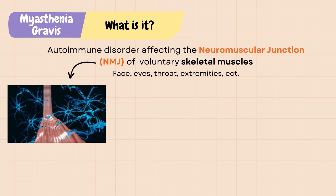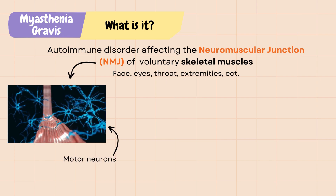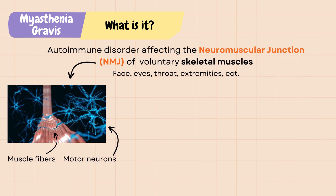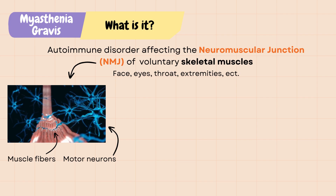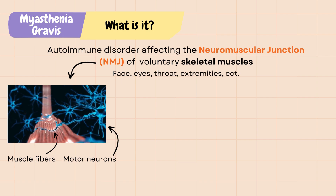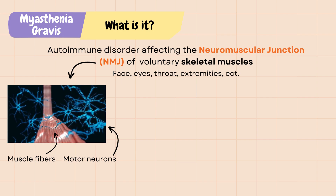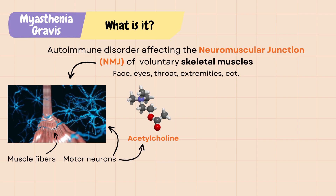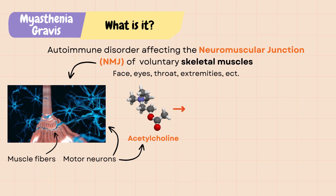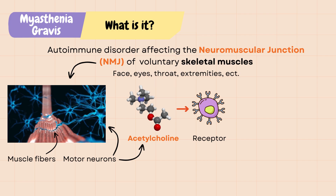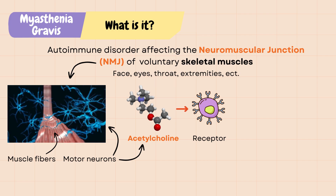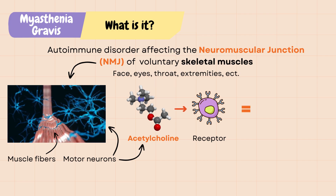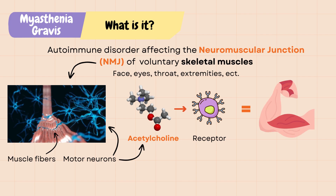The neuromuscular junction is the place where motor neurons and skeletal muscle fibers communicate with each other to generate muscle contraction. Motor neurons release neurotransmitters called acetylcholine, and acetylcholine binds to the acetylcholine receptors on the muscle fiber, which activates a chain reaction within the muscle cell and ultimately results in voluntary muscle contraction.